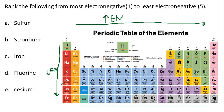The least electronegative elements are what we call electropositive — things like cesium, francium, barium, and radium have very low electronegativities. The ones with the highest electronegativity are in the upper right corner: nitrogen, oxygen, fluorine, and chlorine. Fluorine is the most electronegative element on the periodic table, with an electronegativity of four.